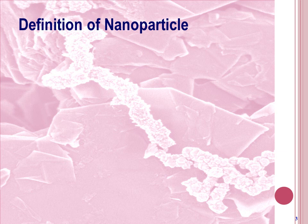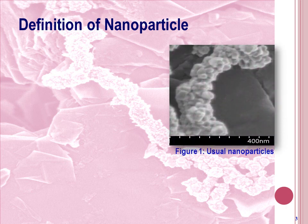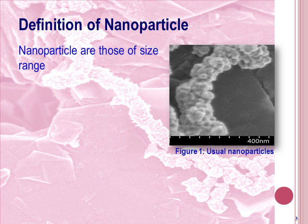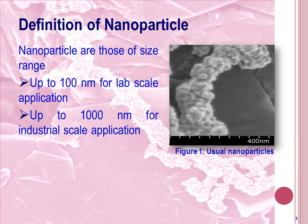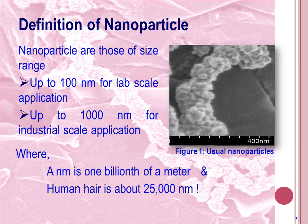After mentioning the word nanoparticle or NP so many times, the question may come to mind: what are nanoparticles, or which particles belong to this class? Before going to the answer, let's see a usual image of a nanoparticle. Here we are seeing a cluster of particles whose image has been taken by magnifying at a scale of 400 nanometers. Now, coming to the definition: nanoparticles are those in the size range up to 100 nanometers for lab-scale application and up to 1000 nanometers for industrial-scale application, where a nanometer is one millionth of a meter and human hair is about 25,000 nanometers in thickness.